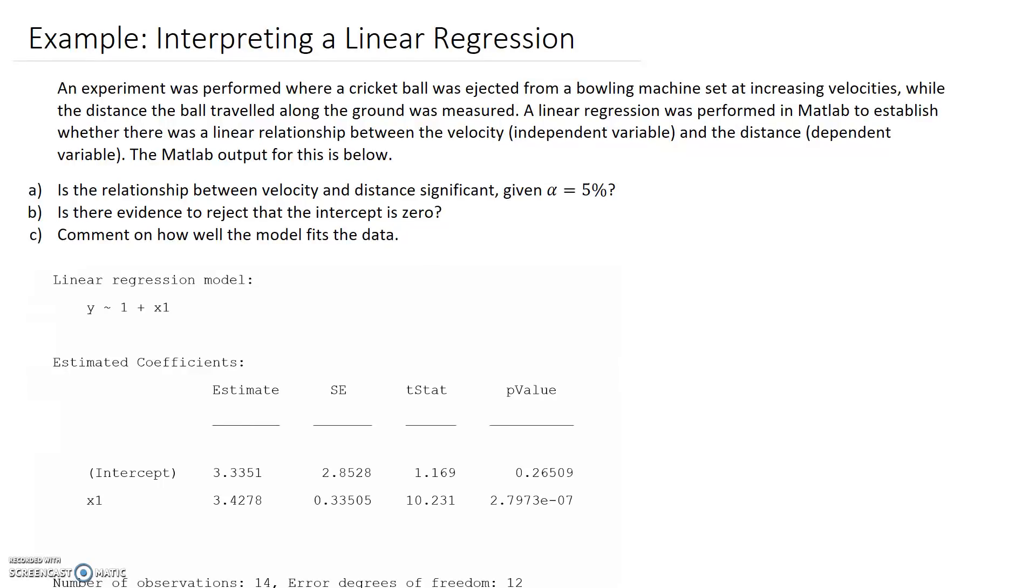An experiment was performed where a cricket ball was ejected from a bowling machine set at increasing velocities, while the distance the ball traveled along the ground was measured. A linear regression was performed in MATLAB to establish whether there was a linear relationship between velocity, our independent variable, because that's the one we're controlling, and the distance, which is our dependent variable, because that's the one we're measuring at the end.